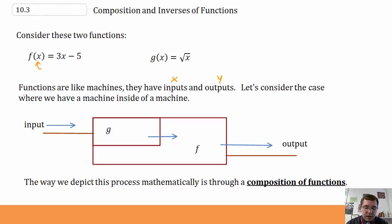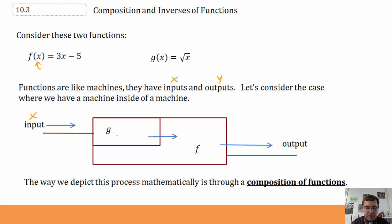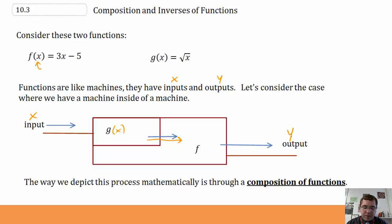Let's consider the case where we have a machine inside of a machine. Here I've got the function g inside of my function f. I put in my value of x — it goes into g, g does its thing to x, it comes out transformed by g, and it goes directly into f. F does its thing, and it comes out of f as my final y, that's my output. So it does g first, the output from g is the input for f, and that's my y.